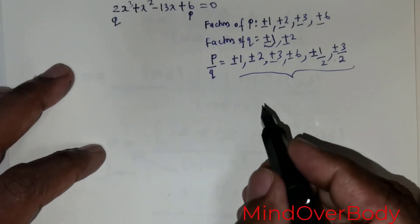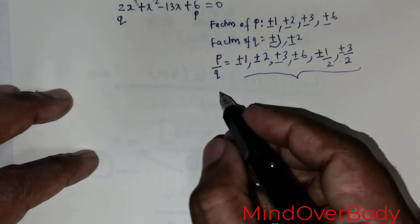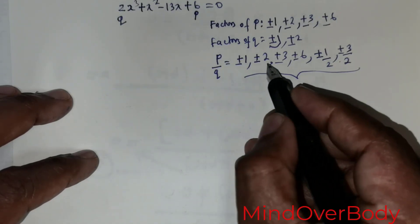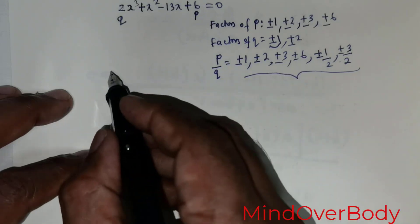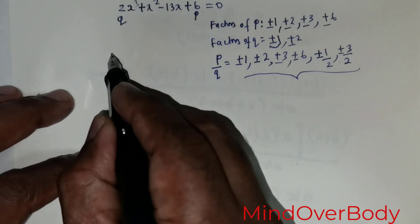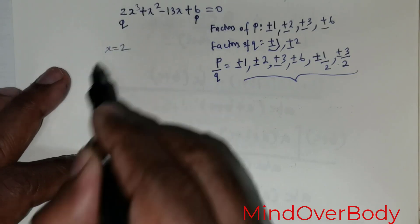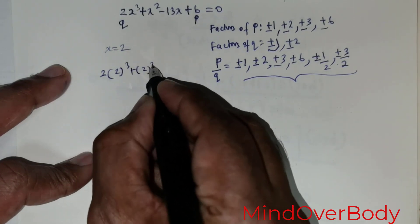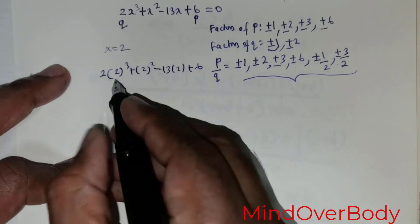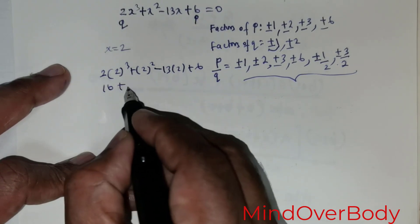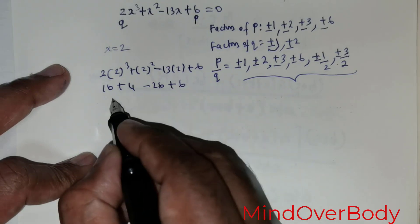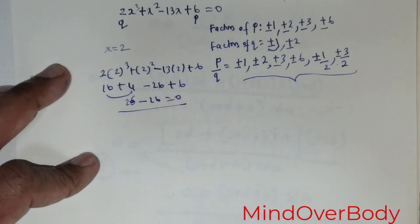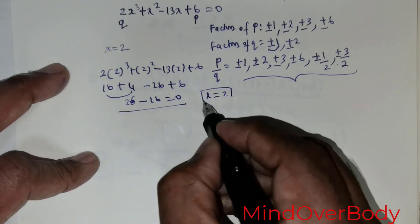We cannot try all factors, so we use trial and error. I'll try x equals 2. Substituting: 2 times 2 cubed plus 1 times 2 squared minus 13 times 2 plus 6 gives 16 plus 4 minus 26 plus 6, which equals 0. So x equals 2 is a root.